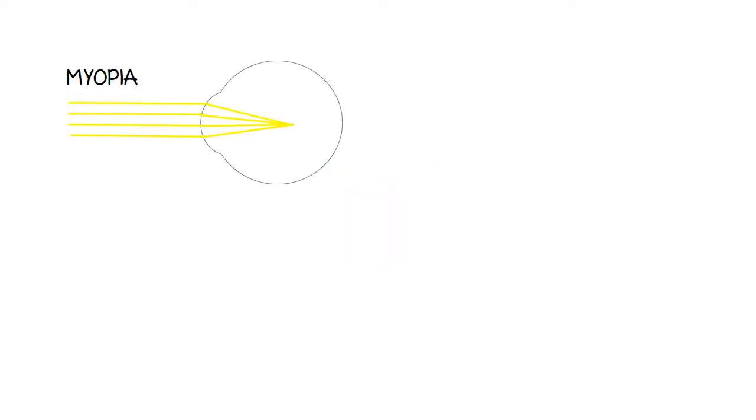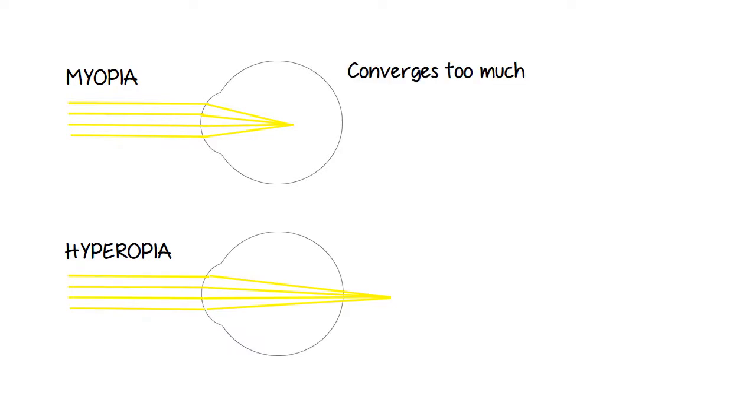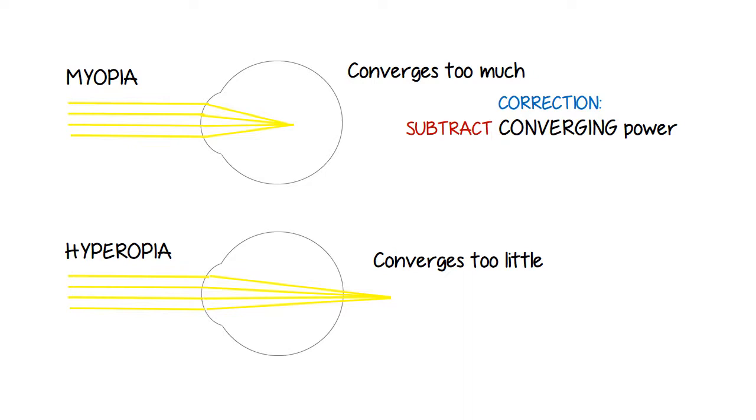And remember, a myopic eye has an excess of converging power, and a hyperopic eye doesn't have enough to focus on the retina. Or a hyperopic eye has too much diverging power, and a myopic eye doesn't have enough diverging power. So in order to correct myopia, we have to subtract converging power. This is done with a minus lens. And in order to correct hyperopia, we have to add converging power. This is done with a plus lens.